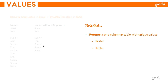A couple of things to note: although the VALUES function gives you a table with only a single column of unique values, at times it can also return a scalar value. A scalar value simply means a single value, not a table. A table is a dataset with rows and columns, but at times VALUES can return a scalar value. Let's look at the VALUES function in more detail and I'll explain how it works in Power BI.